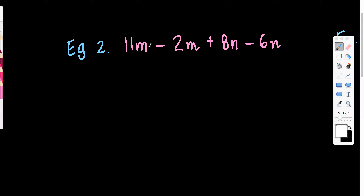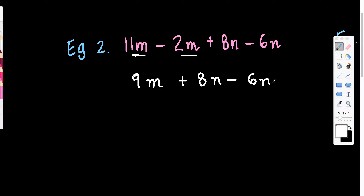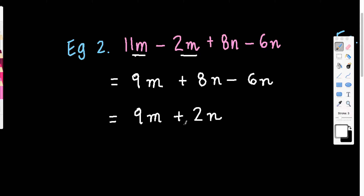Next example: I've got some m's and some n's. Starting with the m's: 11 groups of m take away 2 groups of m leaves 9m. Then dealing with the n's: 8 groups of n take away 6 of them leaves 2 groups of n. So this simplifies to 9m plus 2n. I could have done that in one step — if you're confident, by all means do.